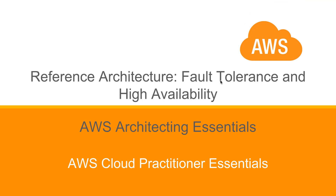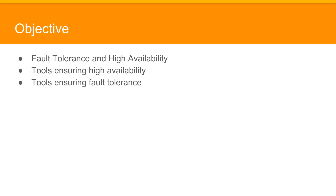Welcome to the course of AWS Cloud Practitioner Essentials, Reference Architecture, Fault Tolerance and High Availability, under the module AWS Architecting Essentials. The objectives of this lesson are to learn about fault tolerance and high availability, tools ensuring high availability, and tools ensuring fault tolerance.